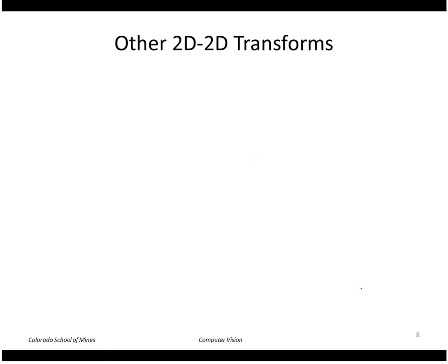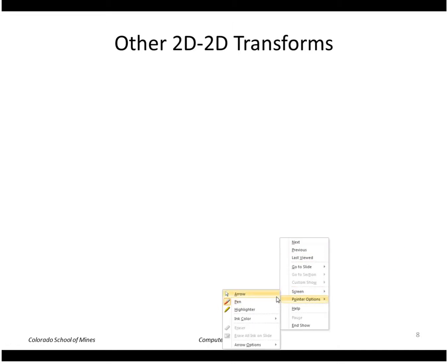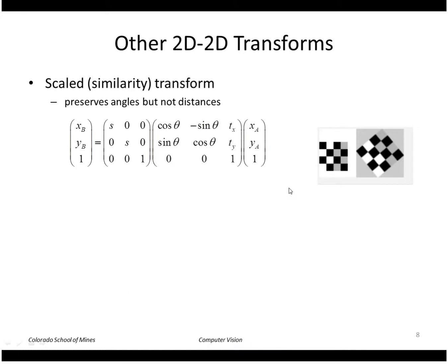We've been looking at rigid two-dimensional transforms. Let's look at non-rigid transforms. This transform is the rigid transform multiplied by a scale factor. This matrix out in front essentially scales everything by a factor of S, so it could rotate, translate, and stretch or scale the object.